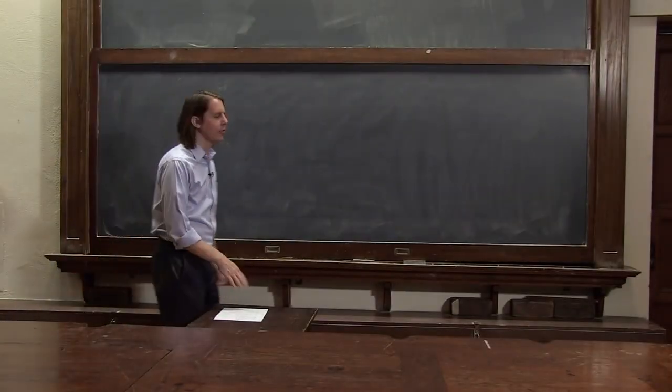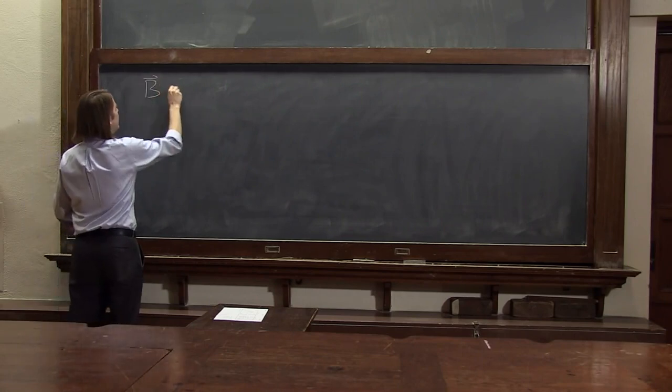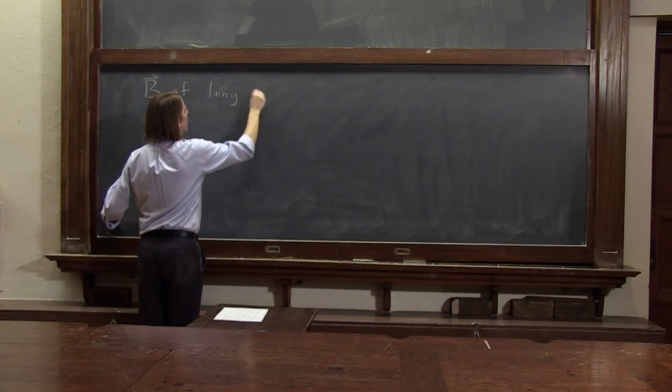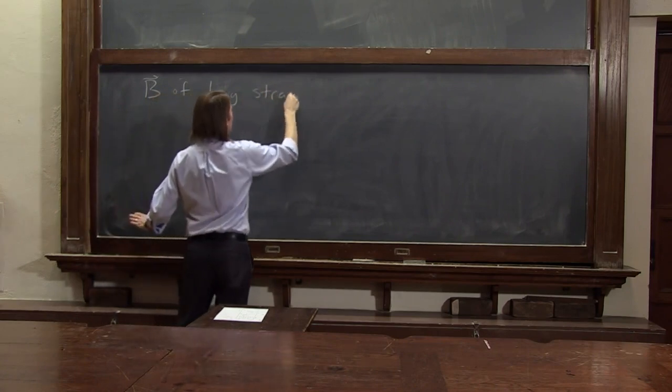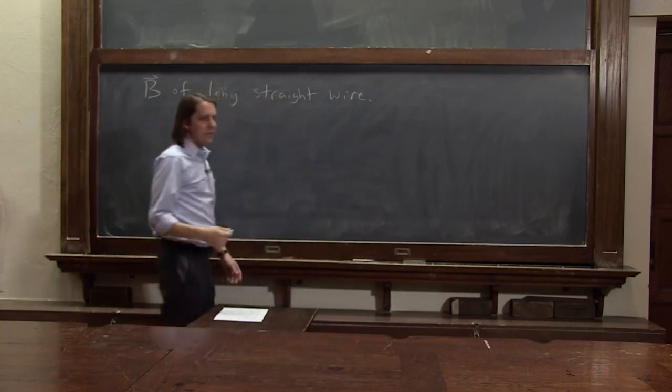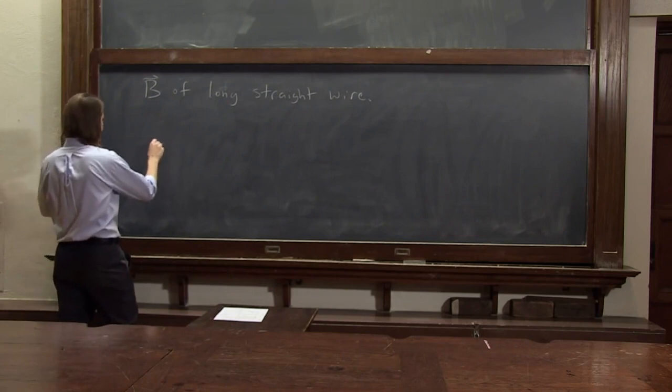Let's practice using Ampere's law in a case with symmetry to calculate the B, the magnetic field of a long, straight wire. We did it with the Biot-Savart law. Let's go ahead and also do it with Ampere's law, make sure we get the same thing.